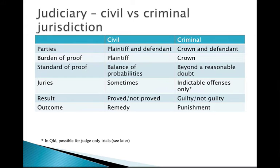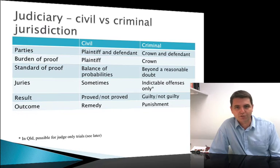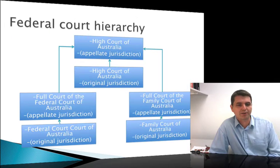At the end of a civil case, the case is proved or not proved. In a criminal case, you're found guilty or not guilty. The outcome from a civil case is a remedy, which is often damages — getting some money. In some cases there are other remedies in equity: specific performance, which is making you do something, or an injunction, which makes you not do something. In a criminal case, we end up with a punishment.